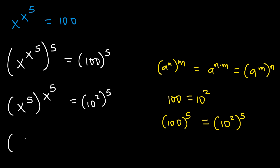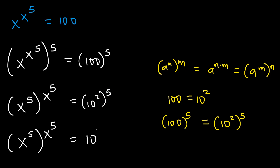So we shall have x to the power of 5, and then to the power of x to the power of 5, equaling to — if we multiply 2 times 5, we shall get 10. So this will be 10 to the power of 10.